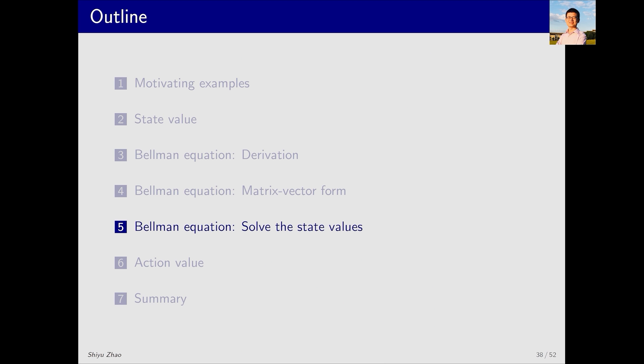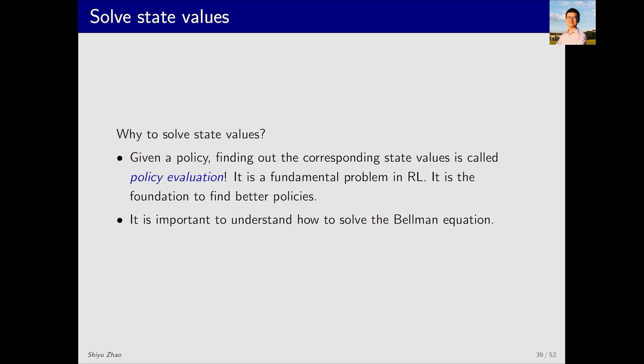Just now, we derived the matrix vector form of the Bellman equation. Next, let's use this matrix vector form to solve state values. First, let's address a critical question. Why solve state values? Given a policy, we can list the Bellman equations and then solve the equations to obtain state values. This process is called policy evaluation, which we have mentioned previously and now formally introduced. Policy evaluation is a fundamental problem in reinforcement learning because it allows us to tell whether a policy is good or bad. Only then can we improve it and ultimately find the optimal policy. Therefore, it is important to understand how to solve the Bellman equation.